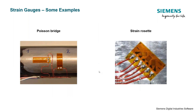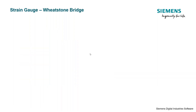Here are a few examples of strain gauges to give a feel for what they actually look like when instrumented. This rod has two strain gauges instrumented to it, and we're also showing a strain gauge rosette, which we'll discuss in more detail later.